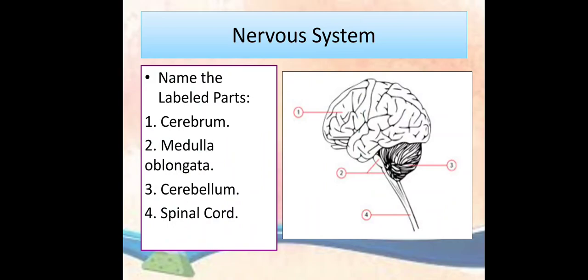The next life process is the nervous system. Here is a diagram of the human brain in which you have to label the given parts. The first one is the cerebrum, the second is the medulla oblongata, the third is the cerebellum, and the fourth is the spinal cord.